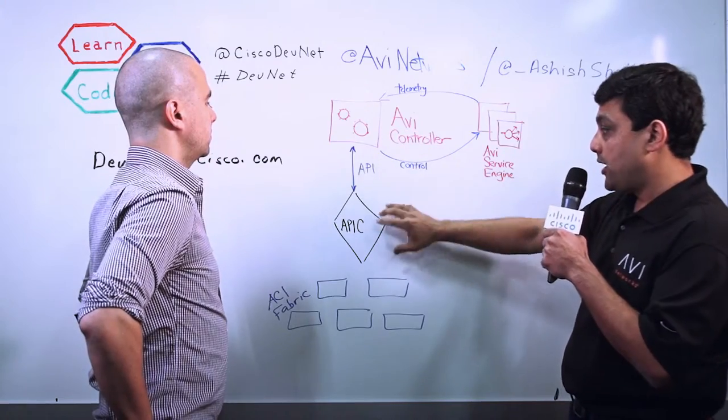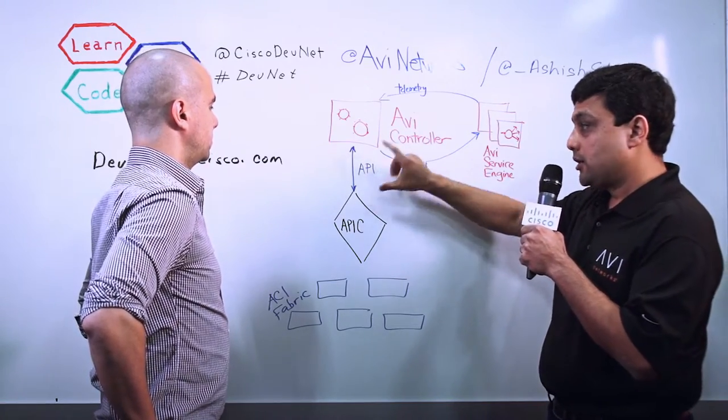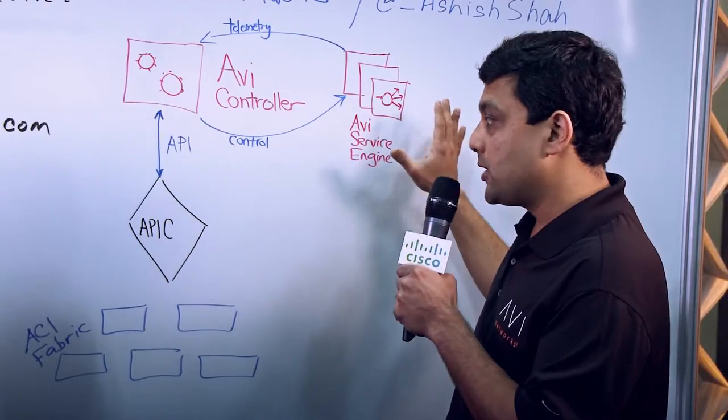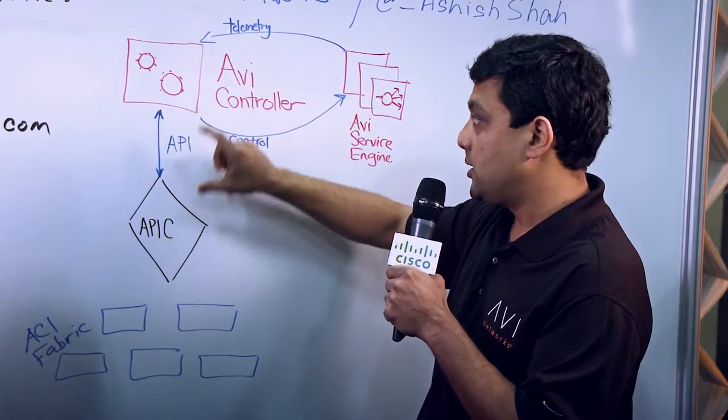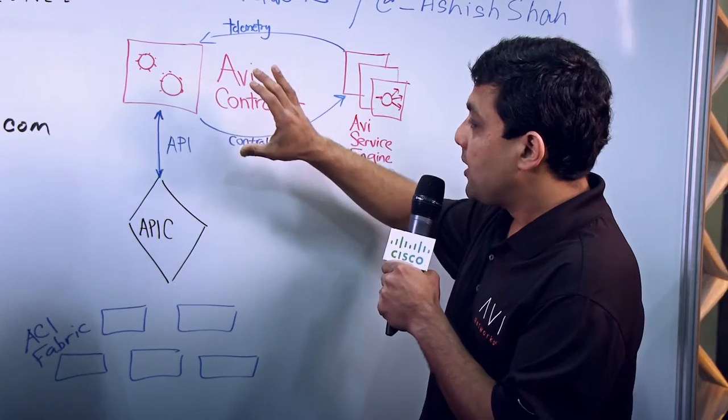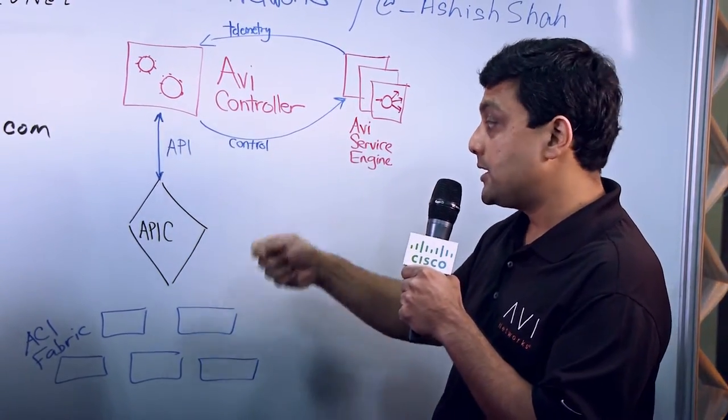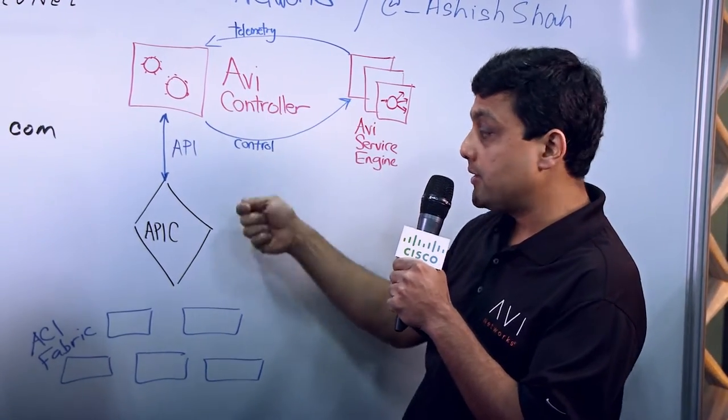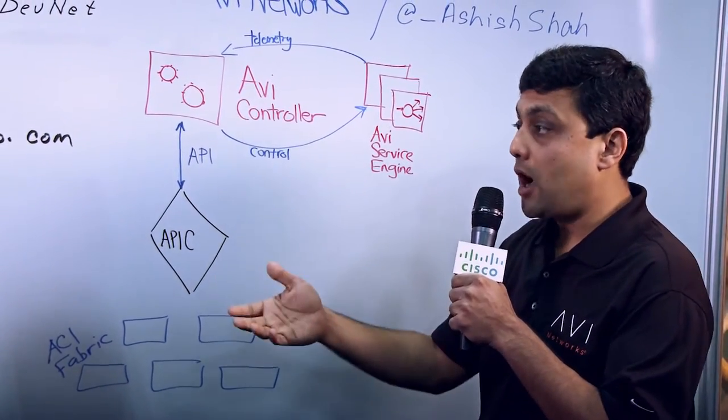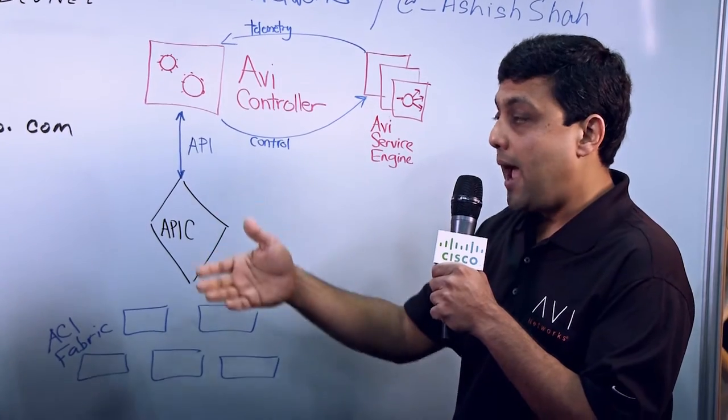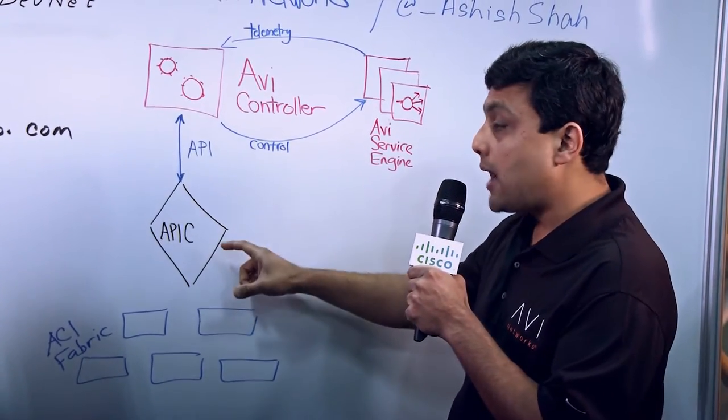The integration between AVI controller and APIC is through REST APIs. So whether you have 10 load balancers or 10,000, you have a single logical integration through the REST APIs. What AVI controller does is talks to APIC and automatically transfers policies between APIC and AVI. So when you do service insertion in APIC, let's say you have a contract for which you are to add a service graph. Once you do add the service graph,